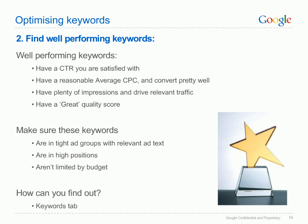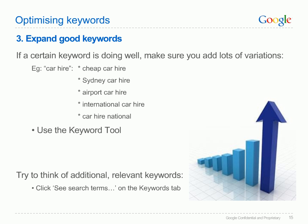Identify well performing keywords using the same criteria from the opposite perspective. Invest in these keywords by ensuring that your bids are high enough, that they are in a tightly structured ad group and do not have budget limitations which may cause your ad not to appear at times when there is potential for conversions. The keywords tab is the place to go. If a certain keyword is doing well, make sure you add lots of variations. For example, if the keyword 'car hire' is performing well, you could add: cheap car hire, Sydney car hire, airport car hire, international car hire, car hire national. The keyword tool can help define ideas for variations, or try clicking 'see search terms' on the keywords tab.